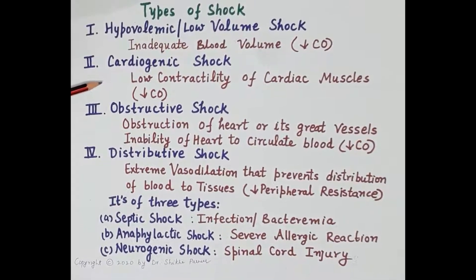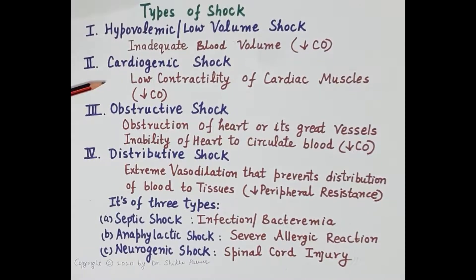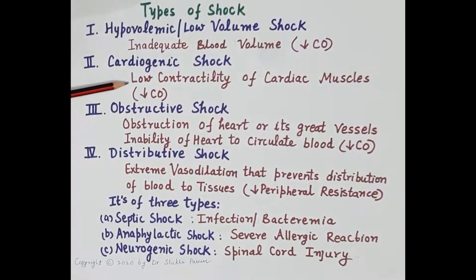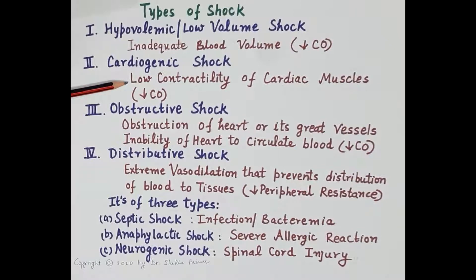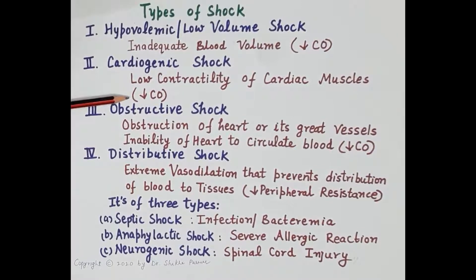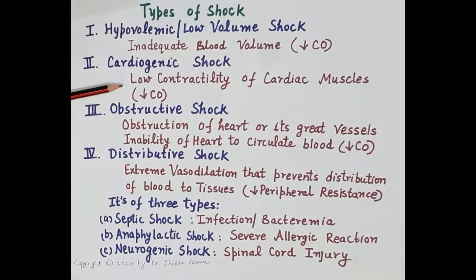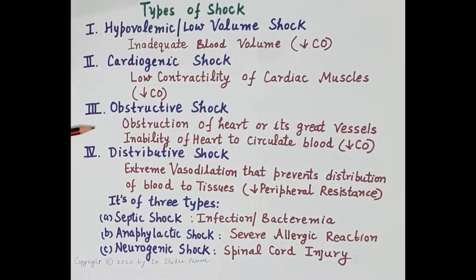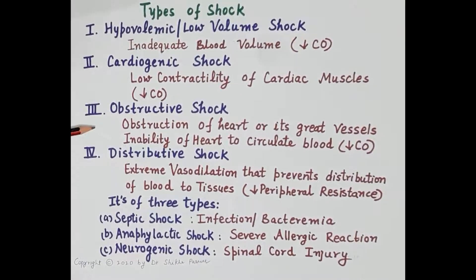The second type of shock is cardiogenic shock. Cardiogenic shock is caused due to dysfunction of cardiac muscles — there is low or reduced contractility of cardiac muscles, which reduces cardiac output. Damage to the cardiac muscles is caused by heart diseases such as myocardial infarction, congestive heart failure, arrhythmias, and many more. Cardiogenic shock and its management is covered in detail in the second video, Shock Part 2.